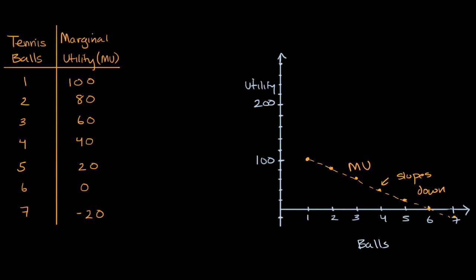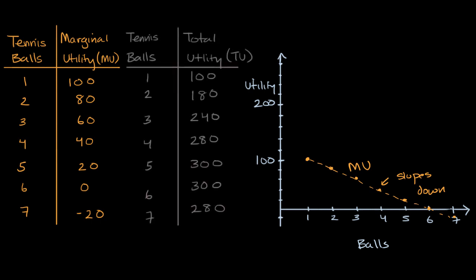What about total utility? So let me have a table here that shows total utility. And total utility from marginal utility is pretty straightforward. All you do is say, okay, well, that first ball, when I have one ball, my total utility is the same as my marginal utility. And so you're going to have that same starting place when your consumption is just beginning.